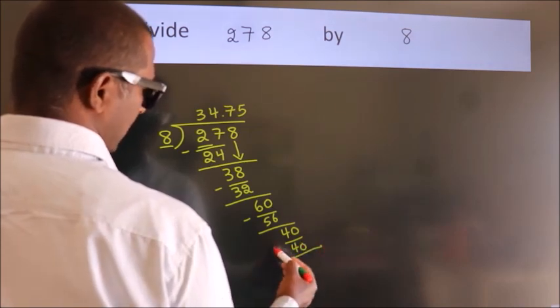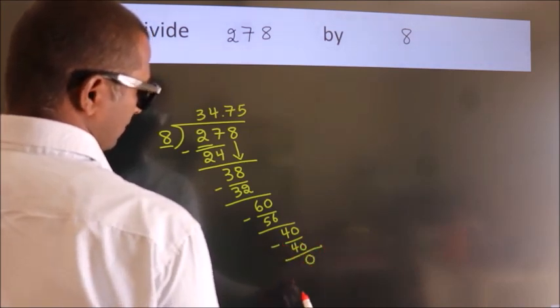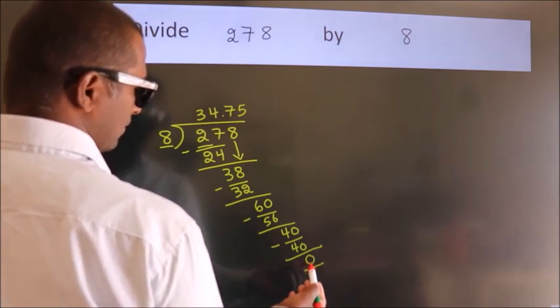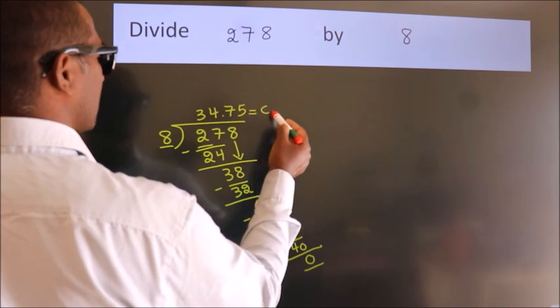Now we subtract. We get 0. Here, we got remainder 0. So, this is our quotient.